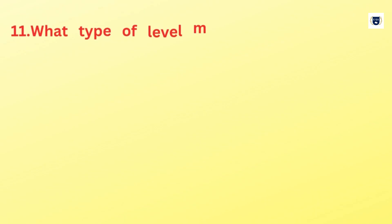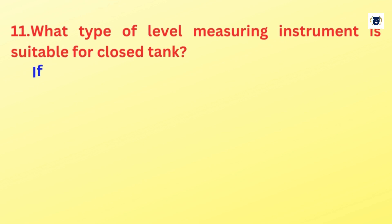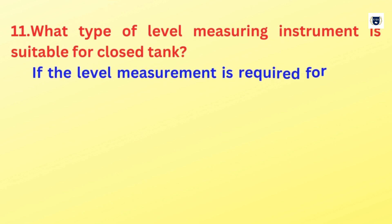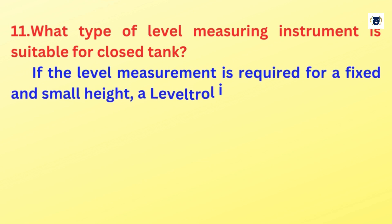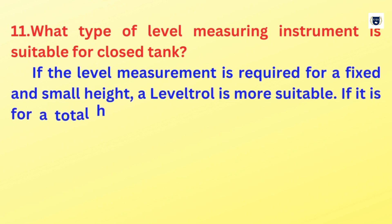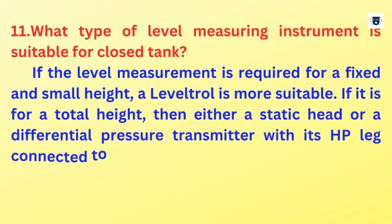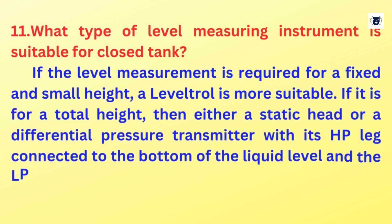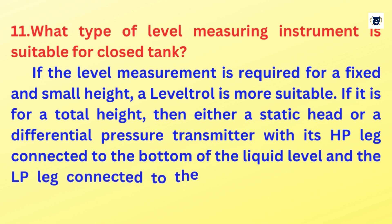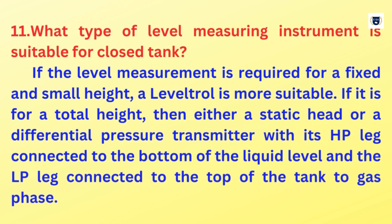What type of level measuring instrument is suitable for a closed tank? If the level measurement is required for a fixed and small height, a level troll is more suitable. If it is for a total height, then either a static head or a differential pressure transmitter with its HP leg connected to the bottom of the liquid level and the LP leg connected to the top of the tank to the gas phase.